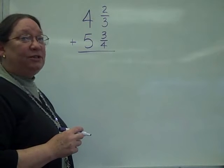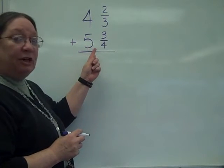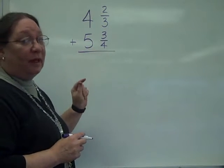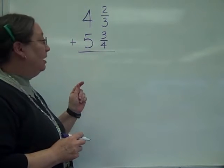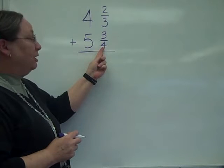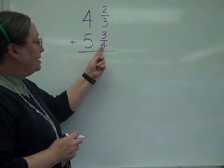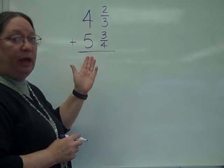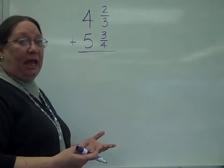Hello. Today, we want to do addition of mixed numbers with unlike denominators. A mixed number, of course, is a whole number and a fraction. And notice the denominators of 3 and 4 are unlike.